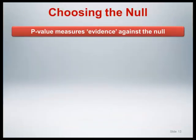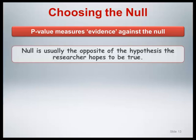In choosing a null hypothesis, it's useful to remember that the p-value approach is structured such that the p-value measures evidence against the value assumed under the null. Therefore, in general, the value of the null is usually selected to be the opposite of the hypothesis the researcher hopes to be true. For the temperature example, the point of the JAMA paper was to determine whether there was evidence against the historically assumed normal value of 98.6 degrees Fahrenheit.